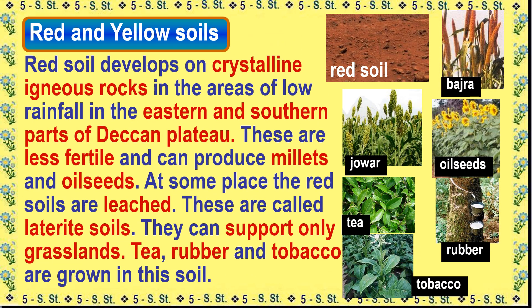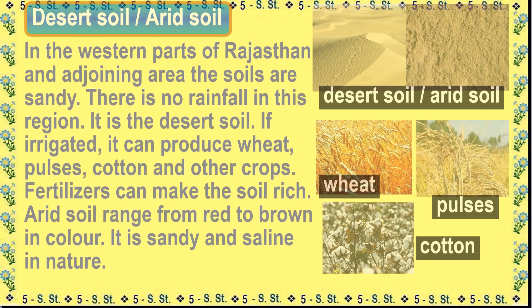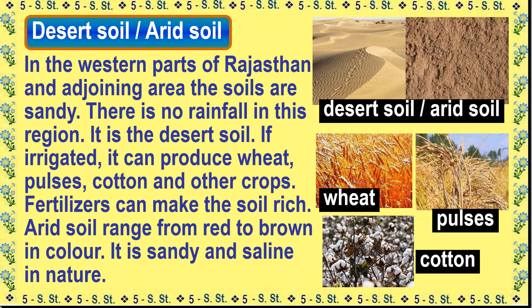Red and yellow soils develop on crystalline igneous rocks in areas of low rainfall in the eastern and southern parts of the Deccan plateau. These are less fertile and can produce millets and oil seeds. At some places, the red soils are leached and are called laterite soils. They can support only grasslands, and tea, rubber, and tobacco are grown in this soil.